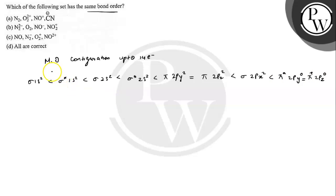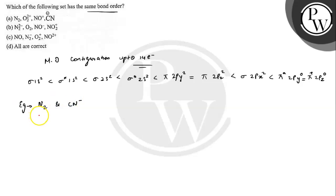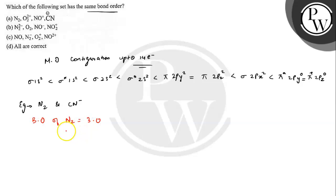This is the molecular orbital configuration up to 14 electrons. The compounds from the options that contain 14 electrons are N2 and CN⁻. These are the compounds that contain 14 electrons. The bond order for N2 is equal to 3, and similarly the bond order for CN⁻ is also 3.